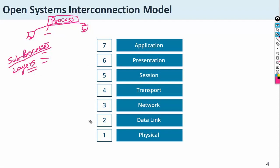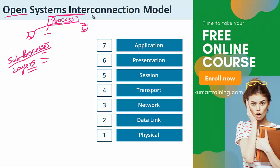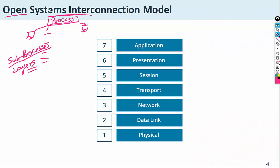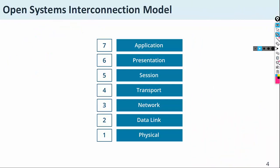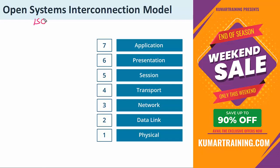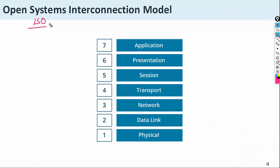There are seven layers in the OSI model. OSI stands for Open System Interconnection Model, and this model was introduced by the ISO — the International Organization for Standardization. ISO developed this model so that all devices and all protocols use the same structure for sending data from one computer to another.